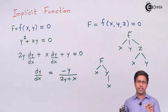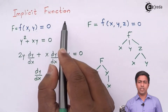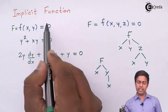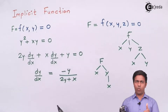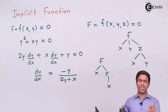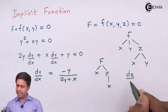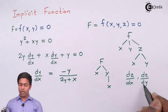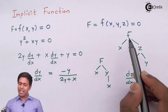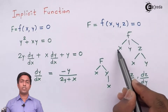There are two ways to identify that a question belongs to implicit function. The first way: whenever a function is given, the right-hand side is equal to zero or some constant. If it's a constant like 3, we take it to the left-hand side making it −3, so the right-hand side becomes zero. The second way: observe the question — they will ask you for dz/dx or dz/dy, not df/dx.